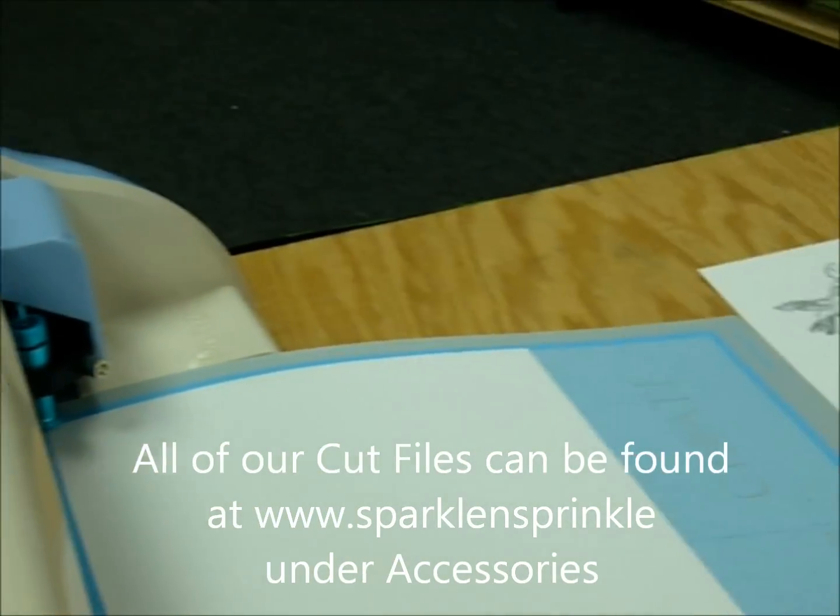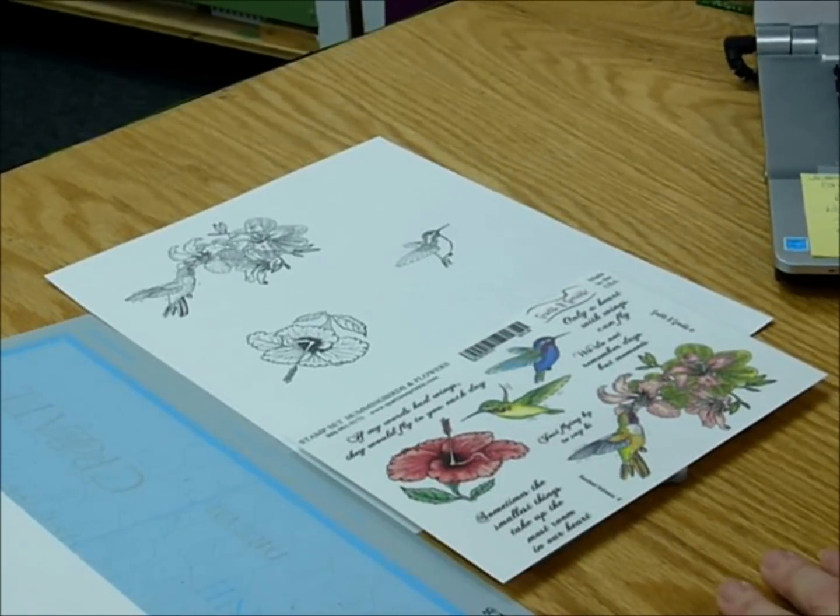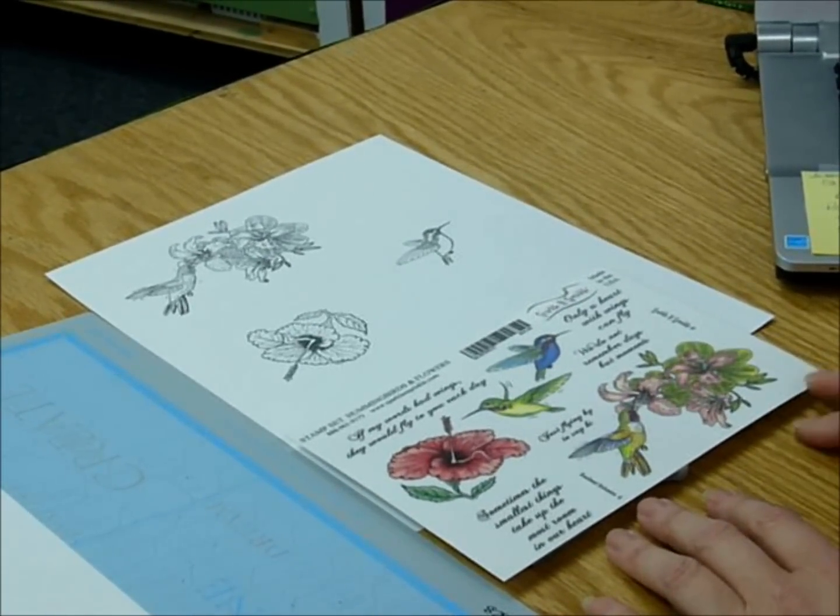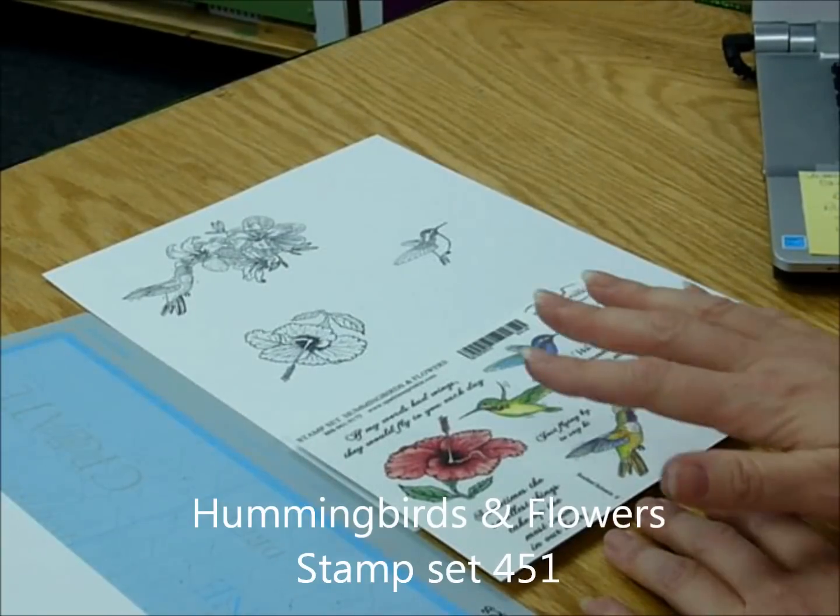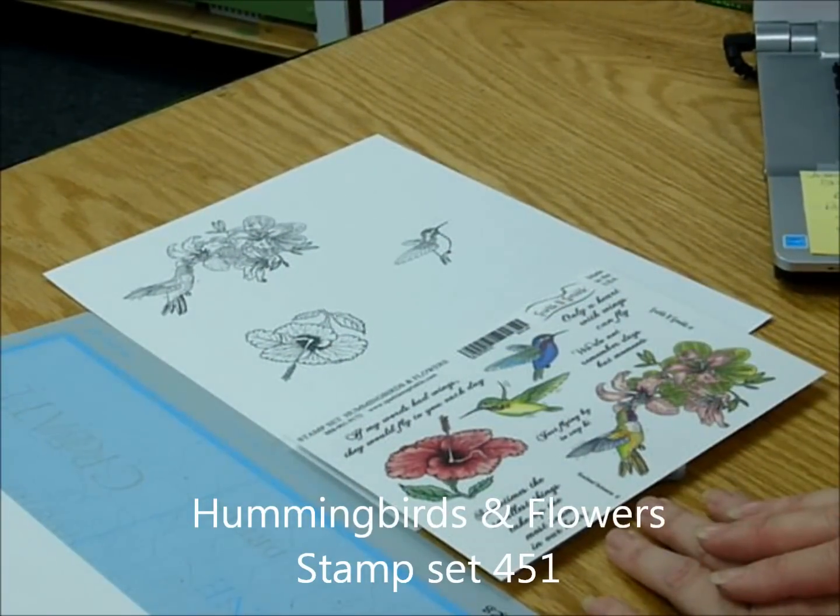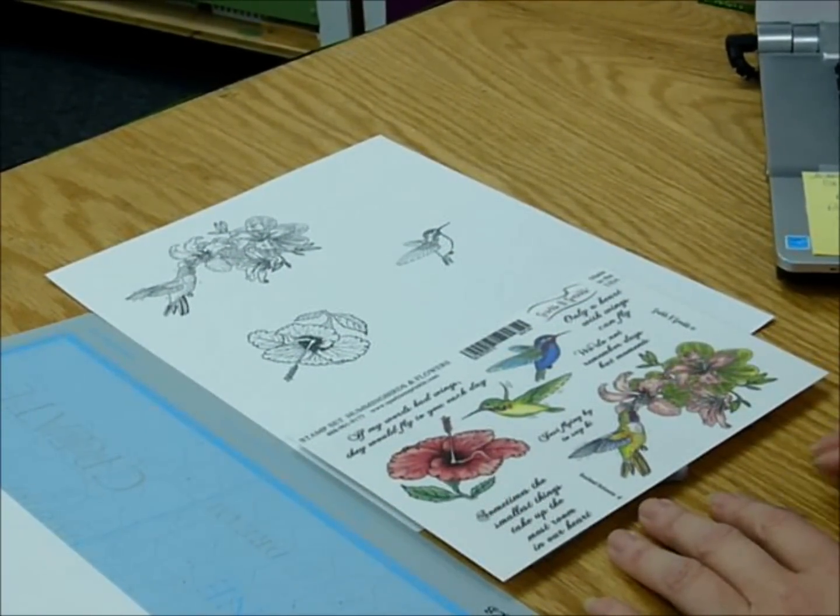Today we're going to be using one of our new stamp sets, the Hummingbirds and Flowers. This is stamp set 451 and you can order this online and you can also order it with the coordinating cut files. Okay, let's go ahead and get started.